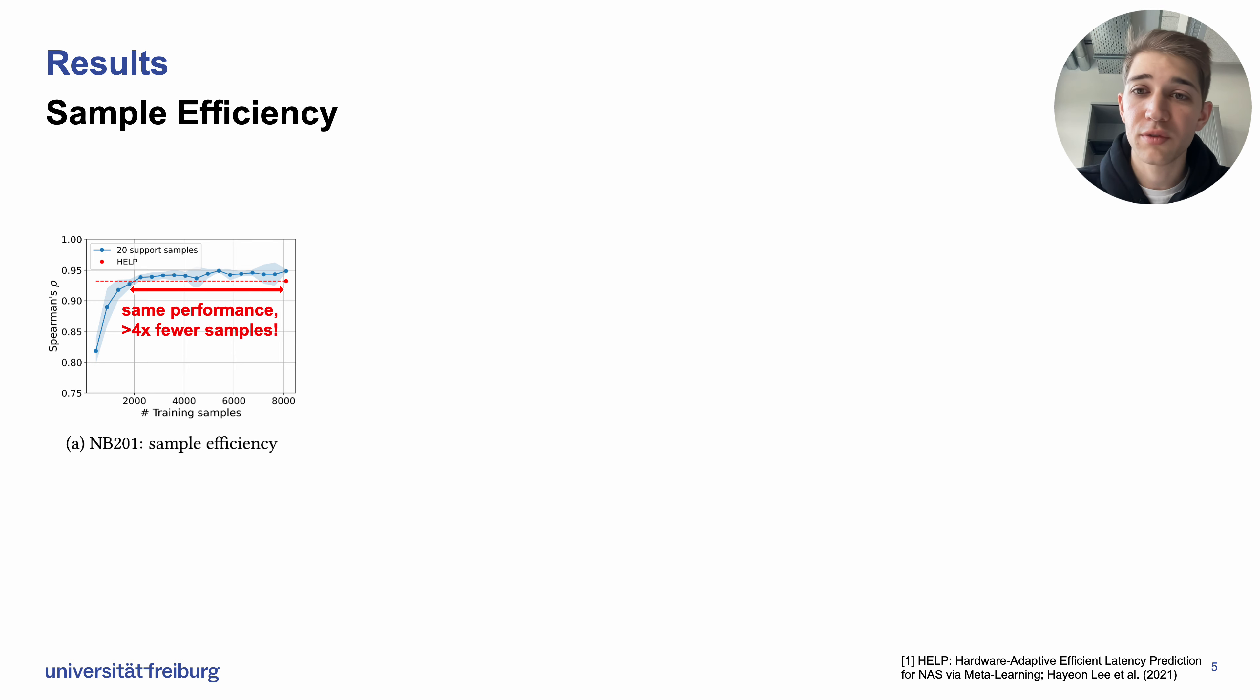We achieve this with a quarter of the training samples that they used in their paper, or actually more than four times fewer samples. This is on the NAS Bench 2.1 search space. We've also looked at the FB-Net search space, and here we're actually beating them in terms of Spearman's rank correlation coefficient.